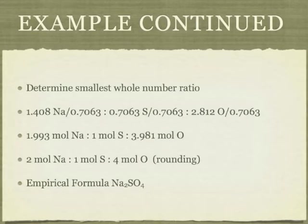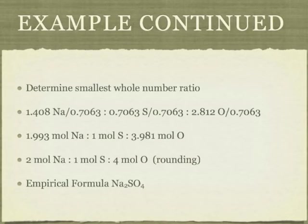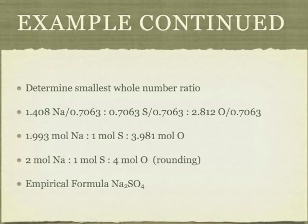We round those up, so we have 2 moles of sodium, 1 mole of sulfur, and 4 moles of oxygen. We put those together in the empirical formula, and we come up with Na2SO4. And that is our empirical formula.